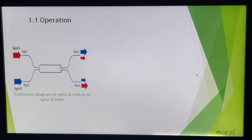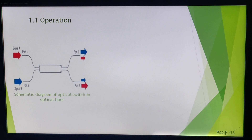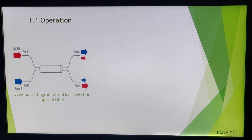Next, this is the operation — a basic diagram showing a two-port network. The basic optical switch has port 1 and port 2 with two signals, signal A and signal B, and at the receiving side we have port 3 and port 4. An optical switch can be handled mechanically, meaning manually we can shift or change which signal is to be transmitted.